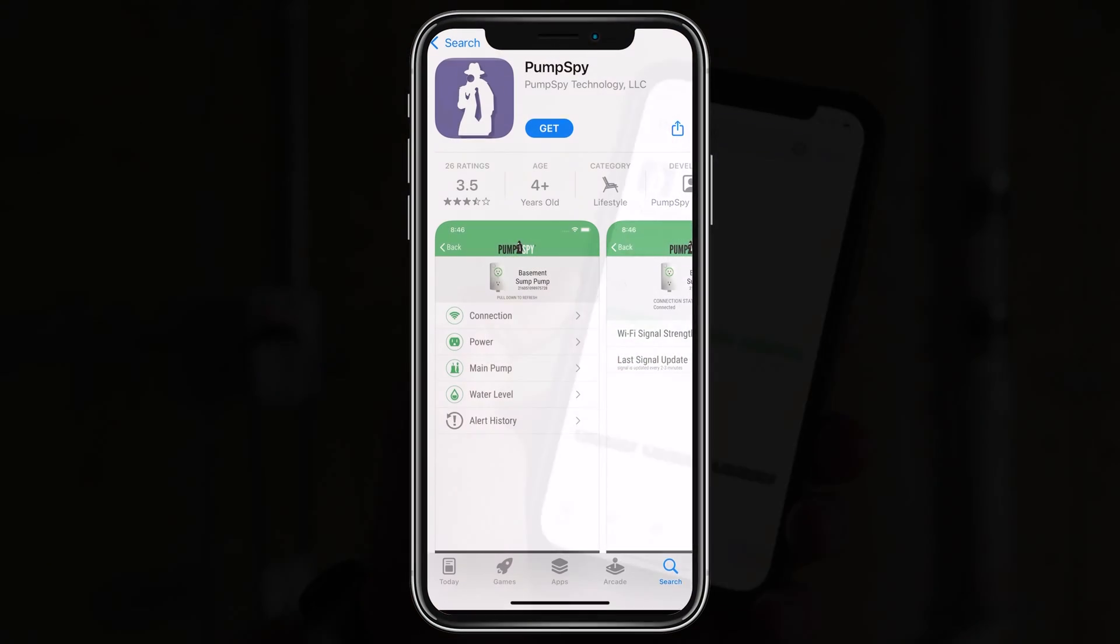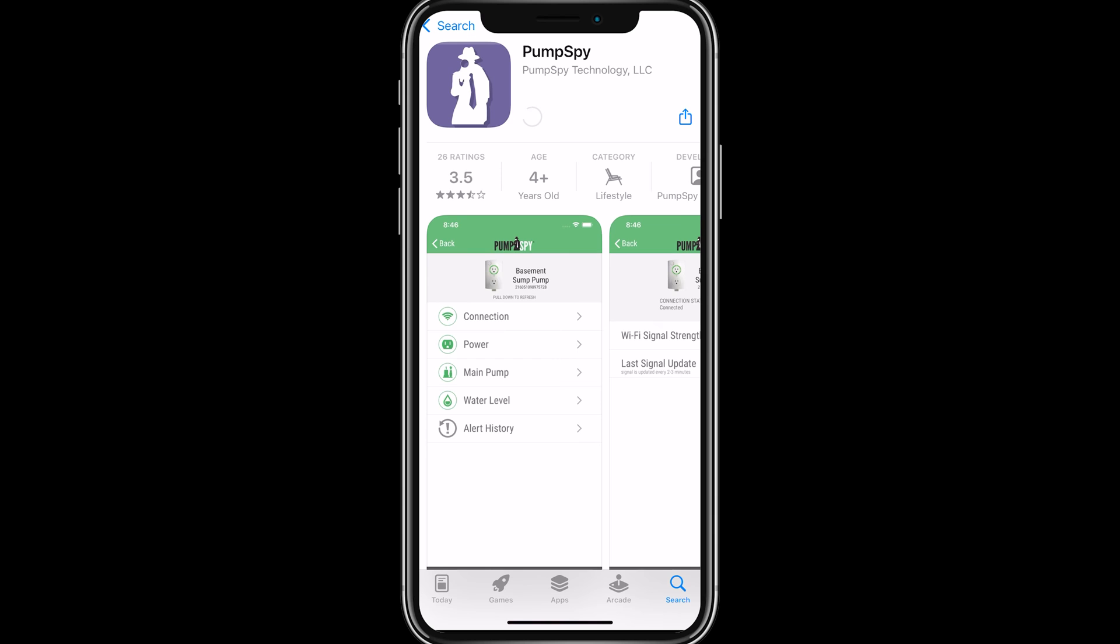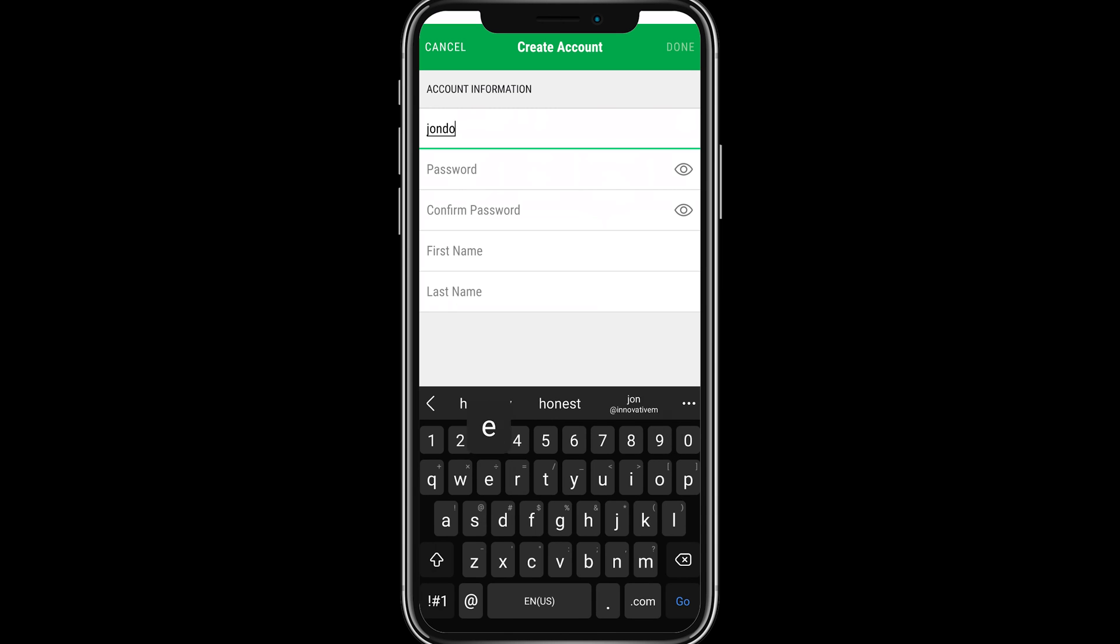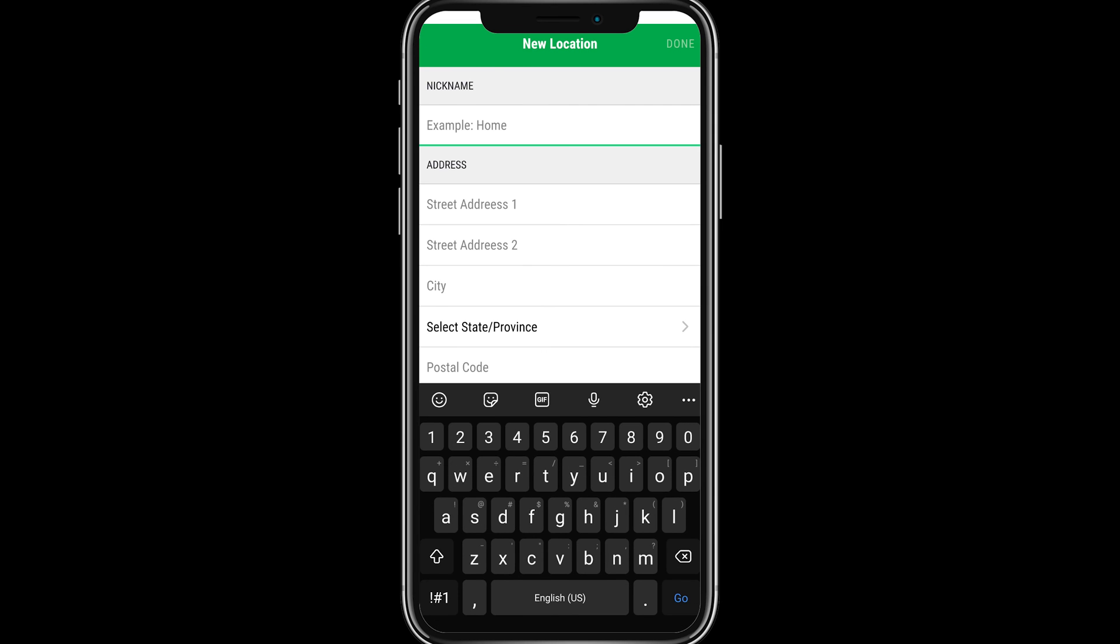Download the PumpSpy app from the App Store or Google Play. Create a PumpSpy account by entering your email address, desired password, first name and last name. Once your account has been created, enter the location information prompted on the screen.